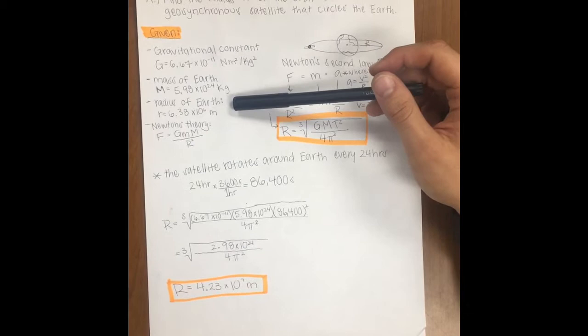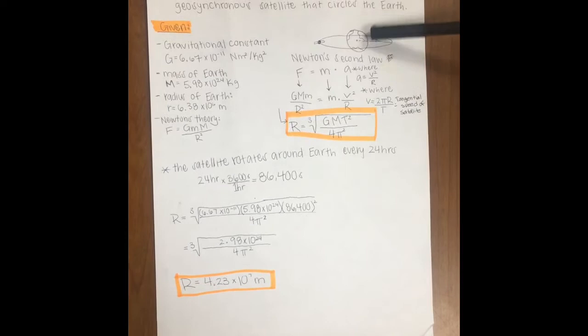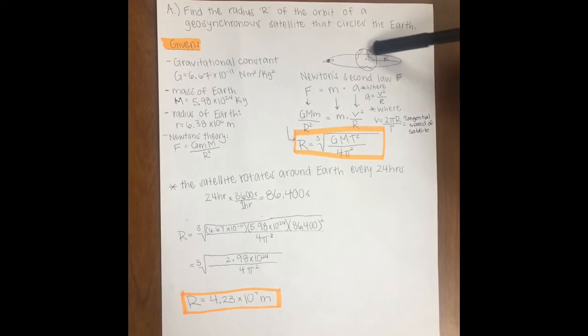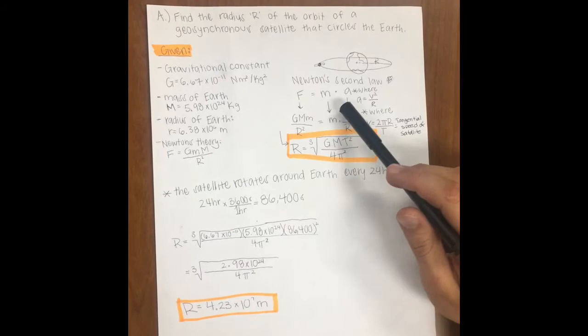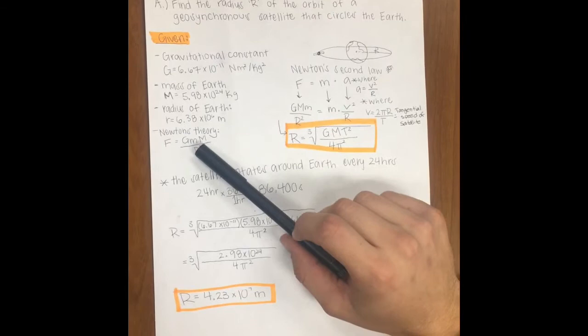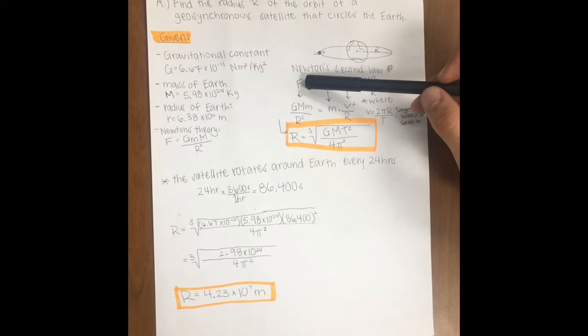So what we do first is we're going to draw a diagram. Here we have the Earth, we have a radius here, and the solid line is the satellite's orbit. We know from Newton's second law that force is equal to mass times acceleration, and we know that F equals big G times m times large M over radius squared. So we substitute F from Newton's theory.